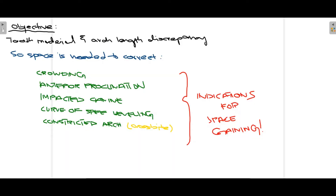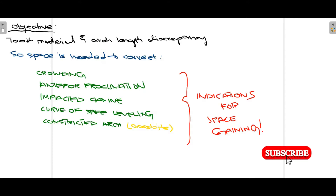The main objective we are trying to achieve in gaining space relates to tooth material and arch length. When there is a mismatch between tooth material and arch length, it results in some discrepancy — and when this is the case, there is crowding, rotations, and teeth are proclined.